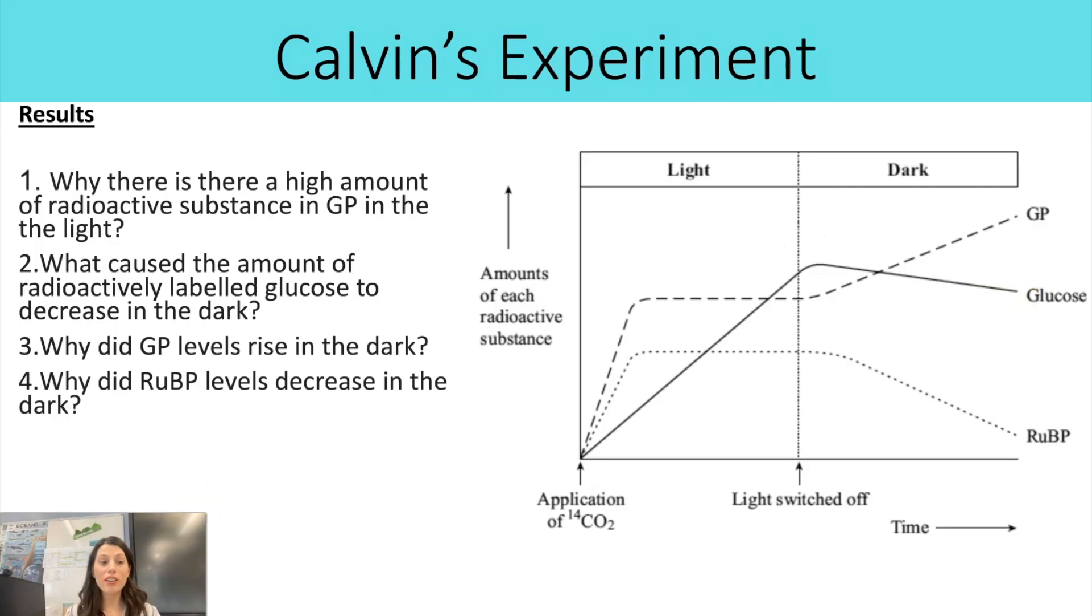Now I've actually already partly explained number three. So why did the GP levels rise in the dark? So it's that same idea. In the dark, the light dependent reactions would stop. So there'd be no more ATP or reduced NADP being created. And those two are both needed to reduce GP into TP. Therefore that doesn't happen. So you get a buildup of GP.